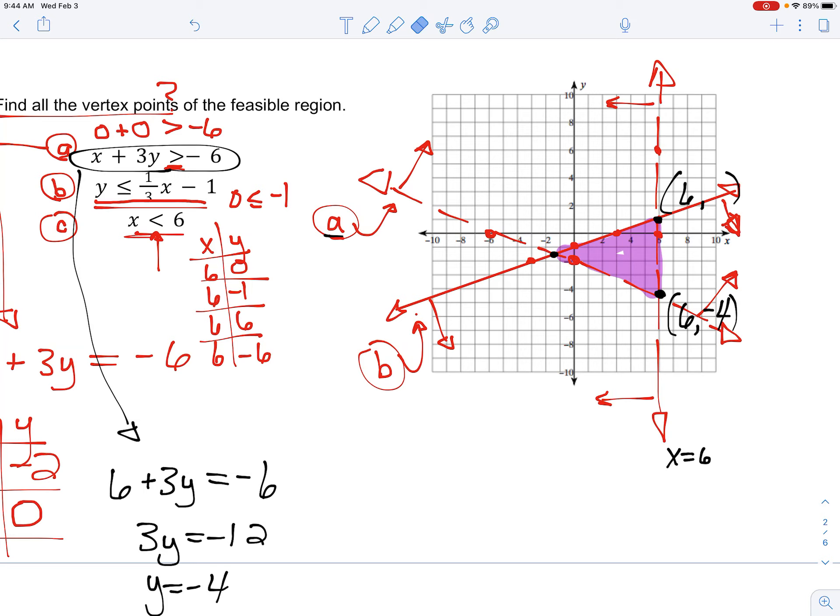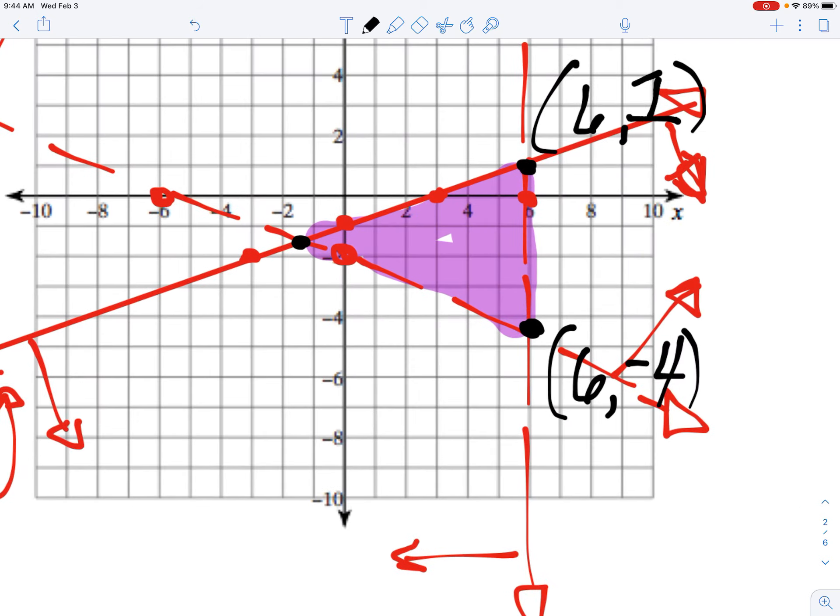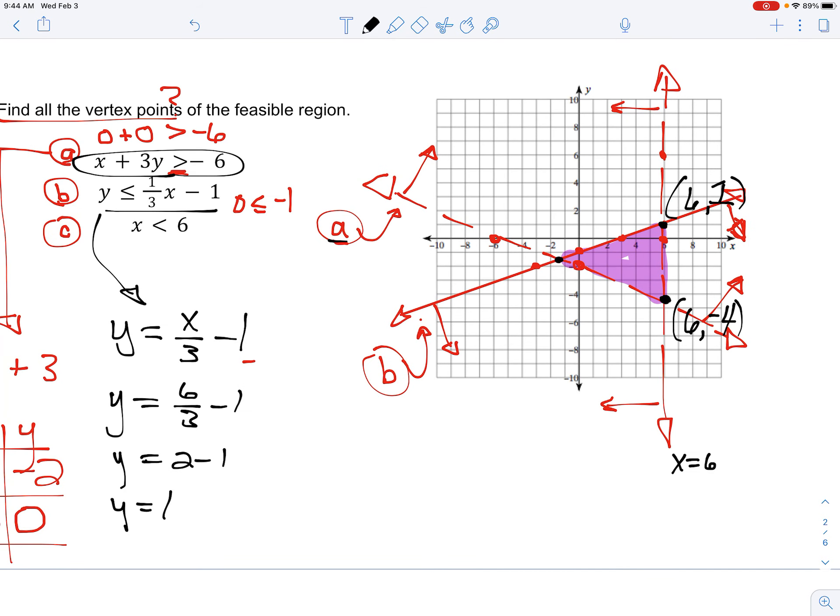On to line B. I'm going to clean up a little bit here. And now I'm going to make sure to find when the x coordinate is 6 of this line, y equals x over 3 minus 1. When x is 6, y is 6 over 3 minus 1. That's 2 minus 1. y equals 1. That is the point 6 comma 1. Looks pretty close. Double check it to see that it satisfies part B.